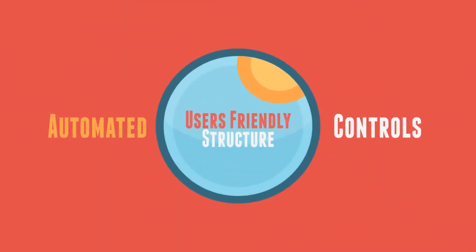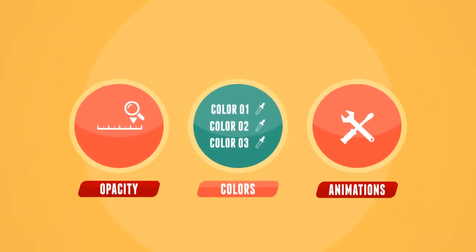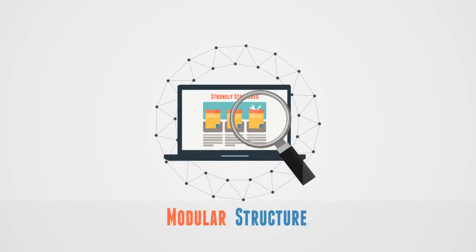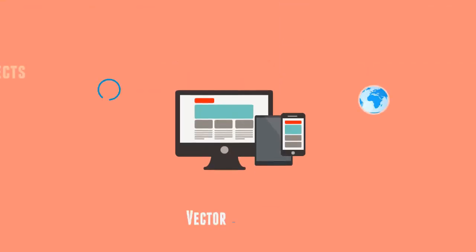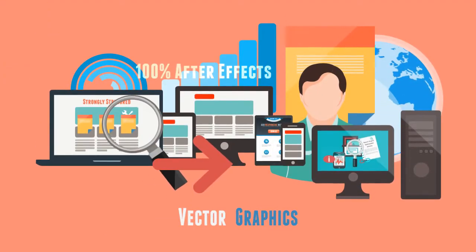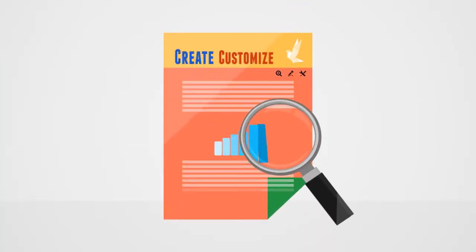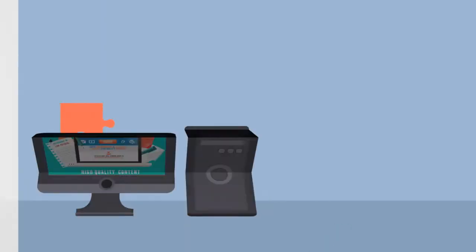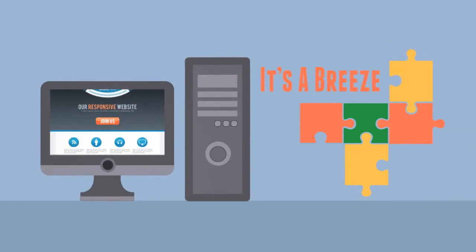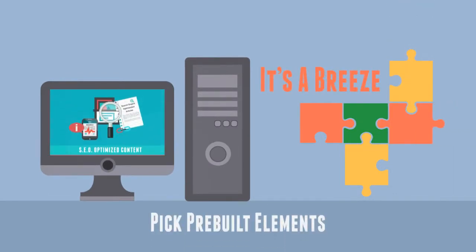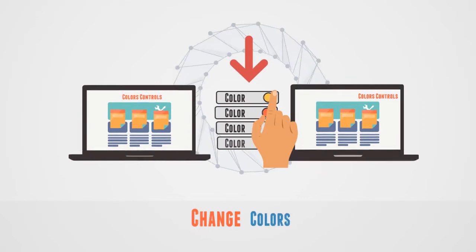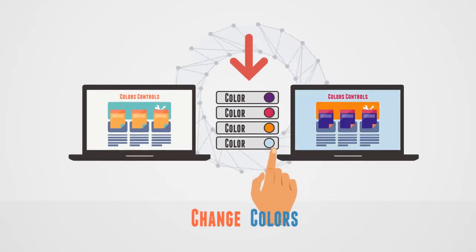These templates come with automated controls relating to colors, opacity and animations, a highly modular structure, and dozens of vector graphics. Create your own storyboard from scratch, or customize the included ones. Simply pick and drop elements. Change colors of all the scene's elements with only a few clicks.